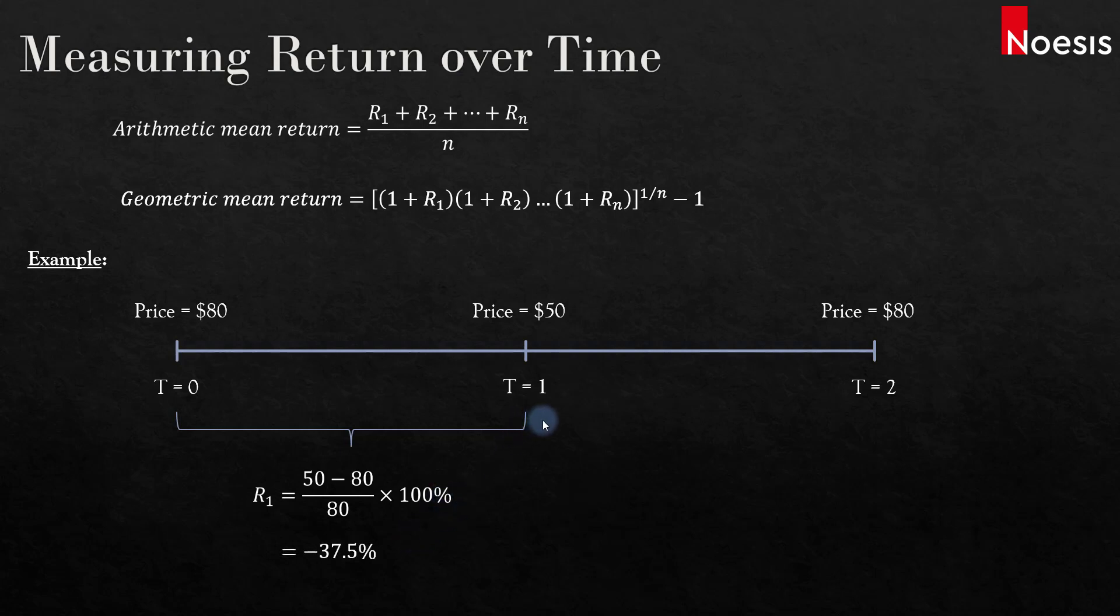For the following year, the return is $80 minus $50 divided by $50 times 100%, which gives us a return of 60%.